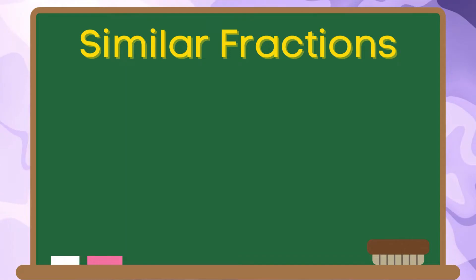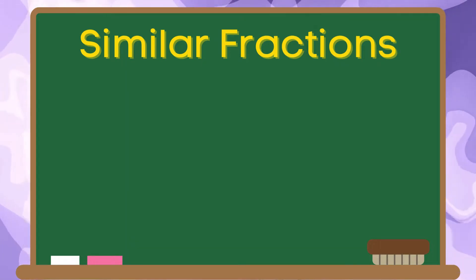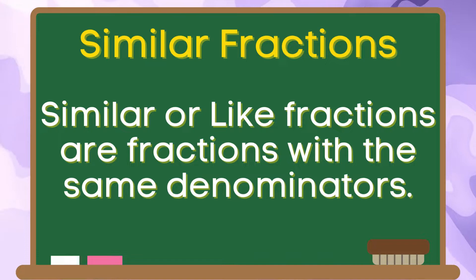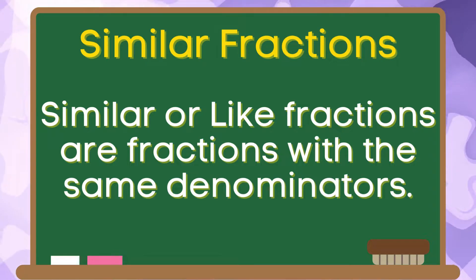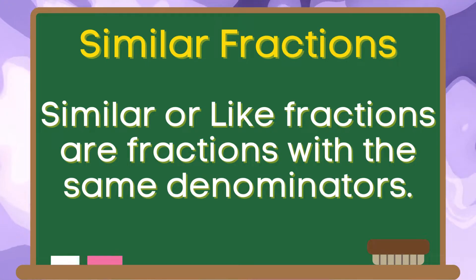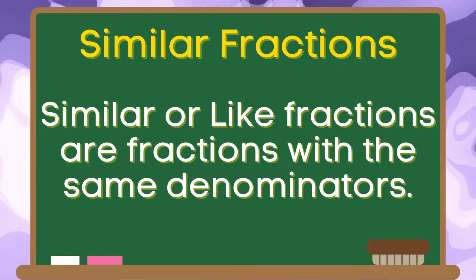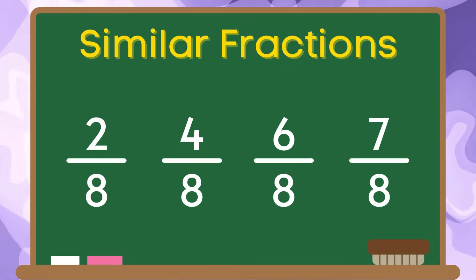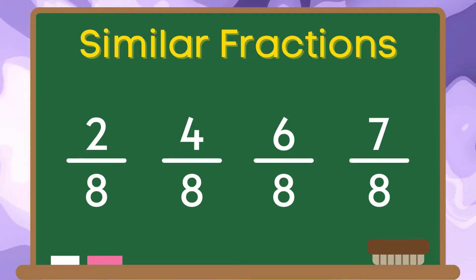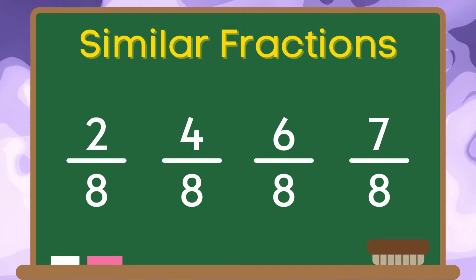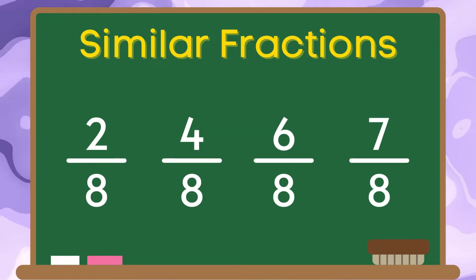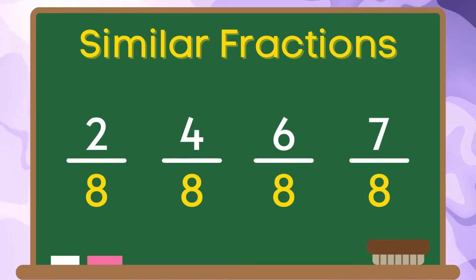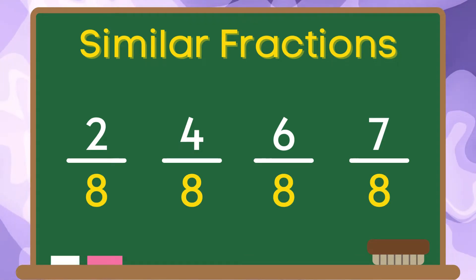Let us have a recall on what are similar fractions. Similar or like fractions are fractions with the same denominators. Two-eighths, four-eighths, six-eighths, and seven-eighths are examples of similar fractions. They are similar fractions because the denominator of the following fractions are the same.